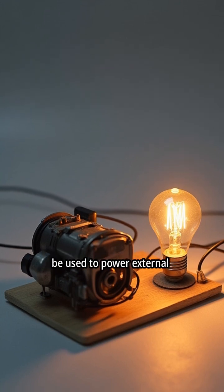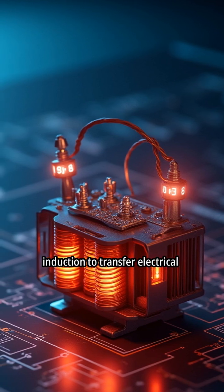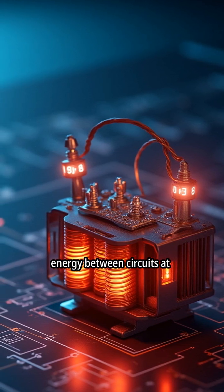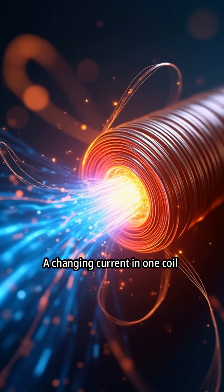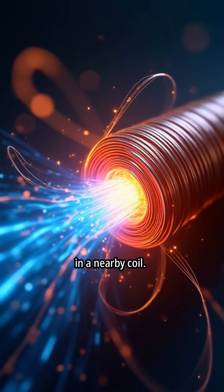The induced current can then be used to power external circuits. Transformers use electromagnetic induction to transfer electrical energy between circuits at different voltage levels. A changing current in one coil creates a changing magnetic field, which induces a current in a nearby coil.